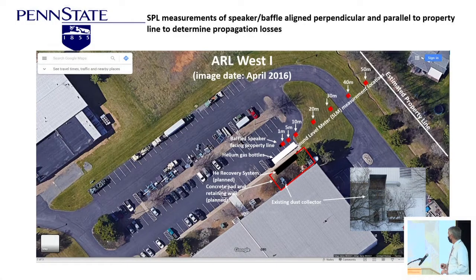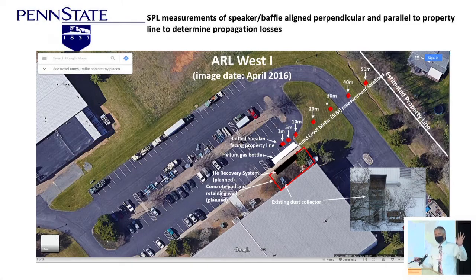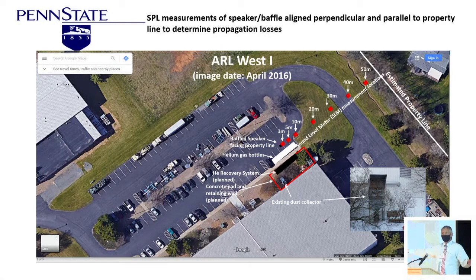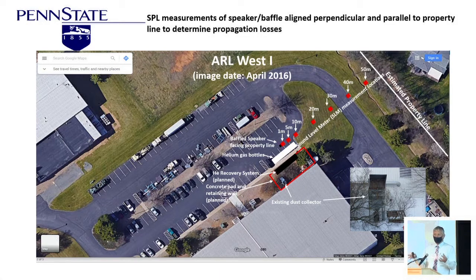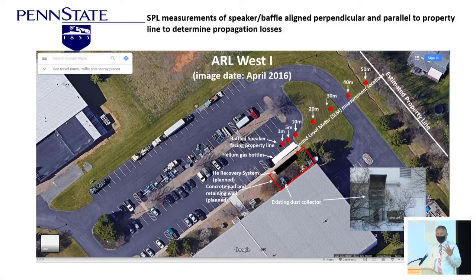The last topic I'll cover is a practical noise survey problem — assessing noise from building a helium recovery system next to a university building. Helium is getting very expensive, and large compressors are used to compress the gas back into helium for reuse. The question was whether this would exceed the noise requirement at the property boundary, which must be less than 55 dBA (A-weighted) after 7 o'clock at night.